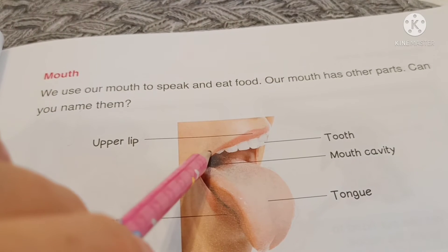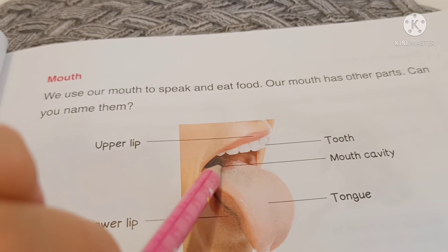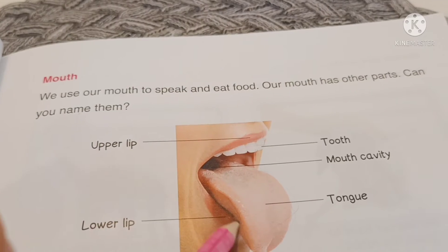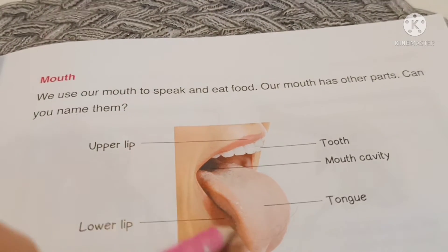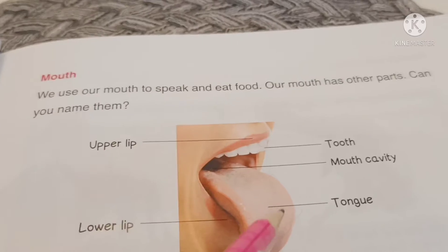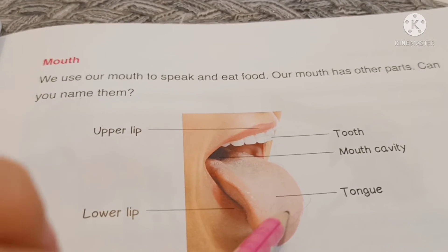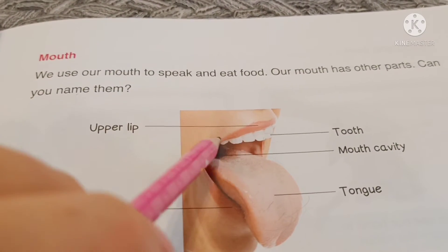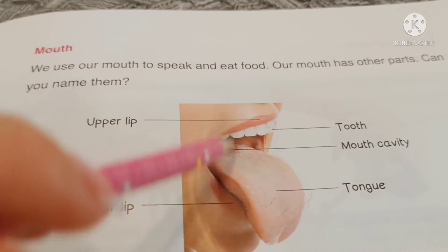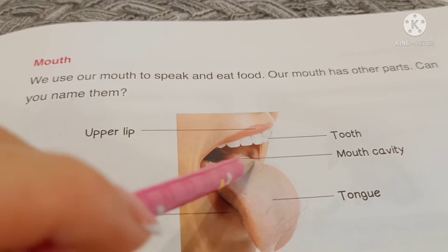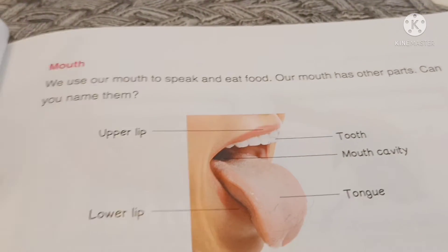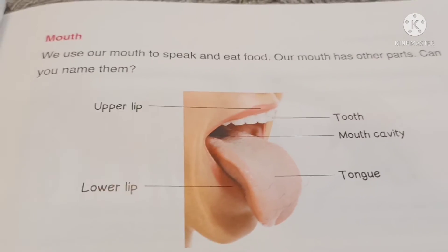Teeth — one tooth, many teeth. Mouth cavity. And the tongue is a big one — with your tongue you can taste different food. You can eat, you need to chew. And you can speak because you use your mouth and tongue to say something.